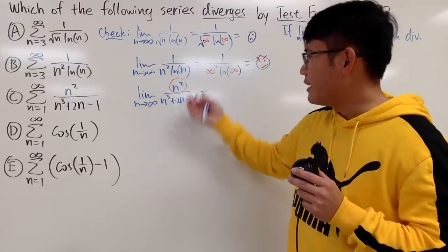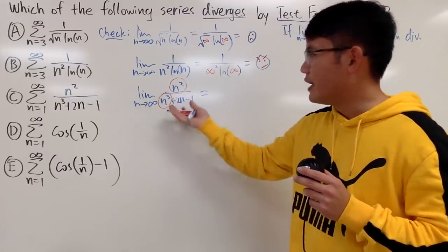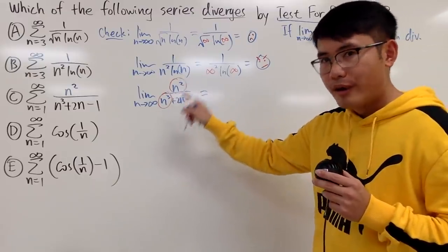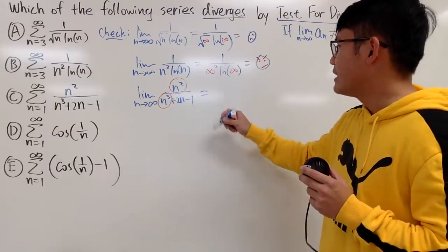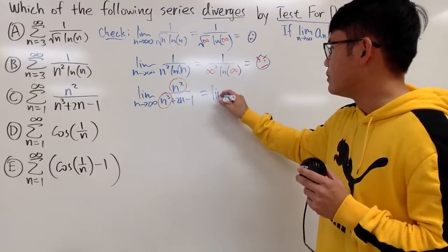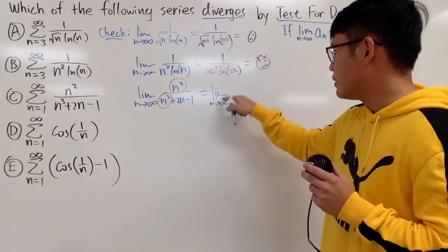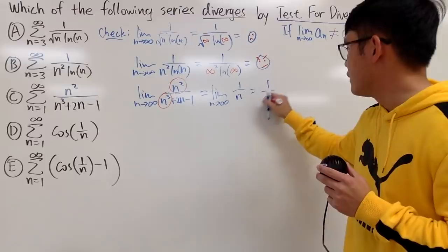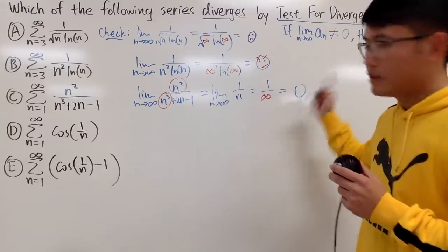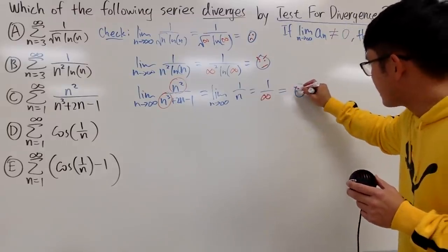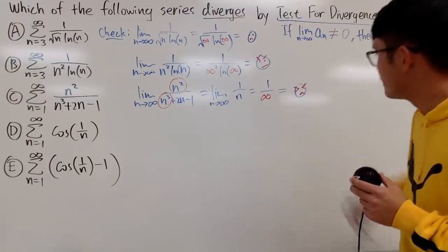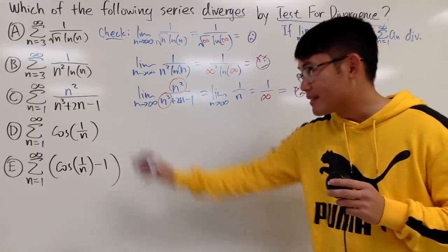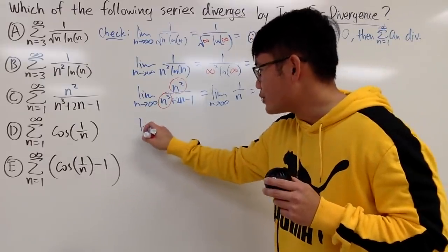But the quick and dirty way is, since this is a rational situation, we can just pick the highest power of n on the top, and also the highest power of n on the bottom. So this is reduced to 1 over n, right? And you take the limit of that. You pretty much will just get, let me just write it down, n goes to infinity. Reduce it, you get 1 over n, which is 1 over infinity, which is 0, which is like this kind of phase. I don't know.